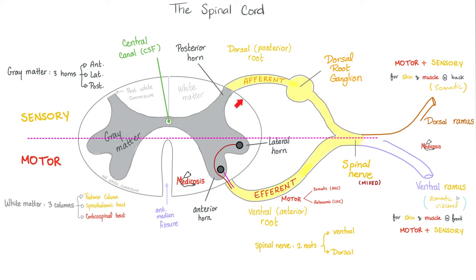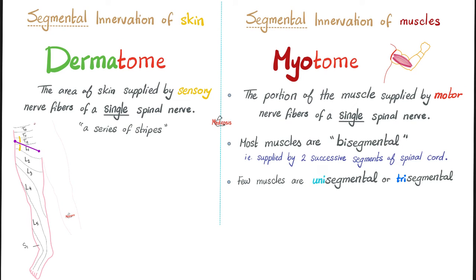Here is the spinal segment: the efferent — anterior — is motor, and the afferent — posterior — is sensory. Dermatome: segmental innervation of your skin. Your skin is divided into lovely slices; each slice is supplied by a singular spinal nerve. We have a series of stripes called dermatomes.